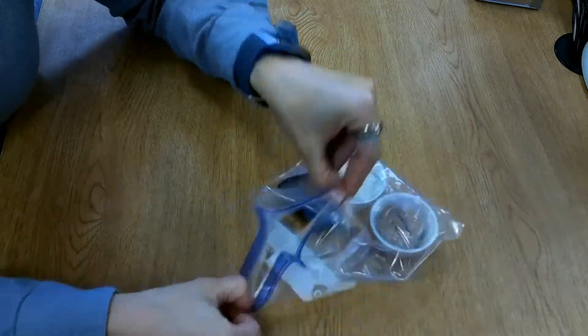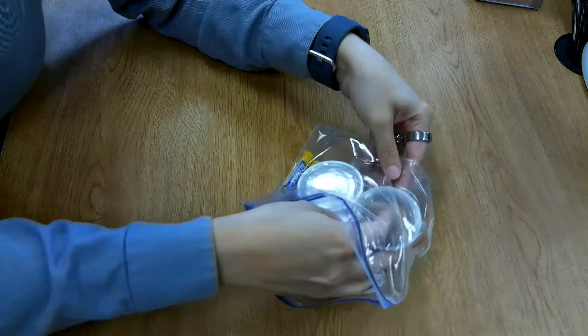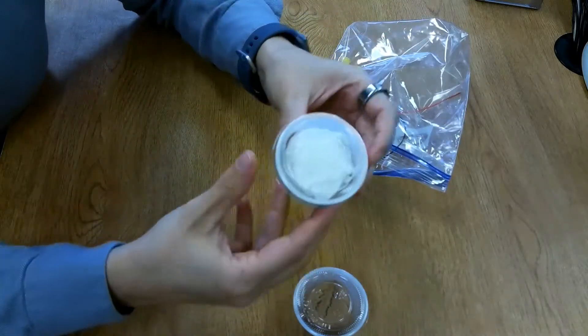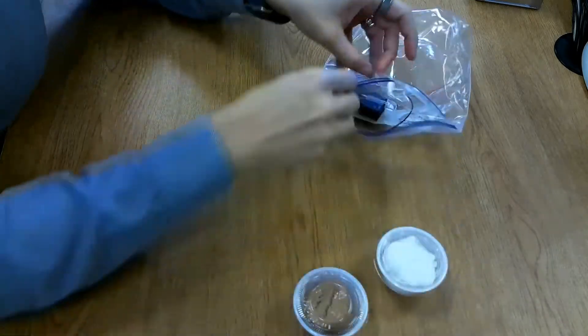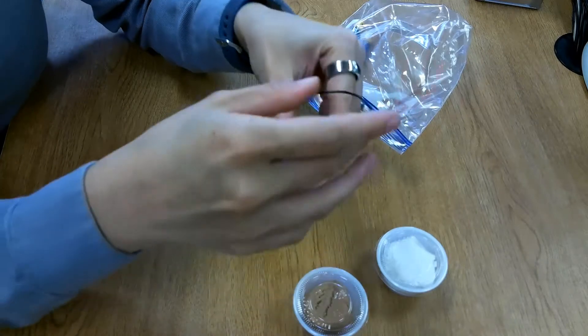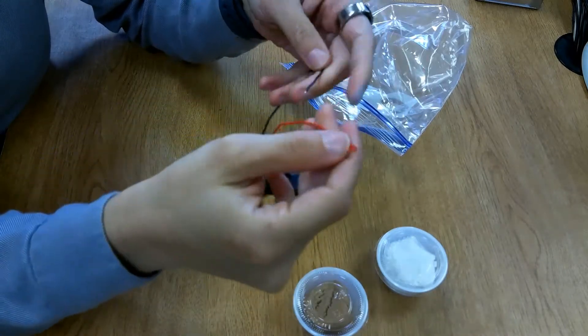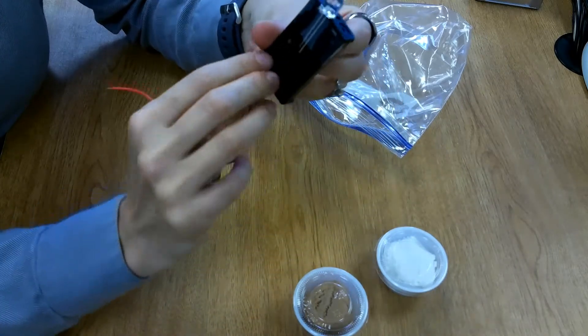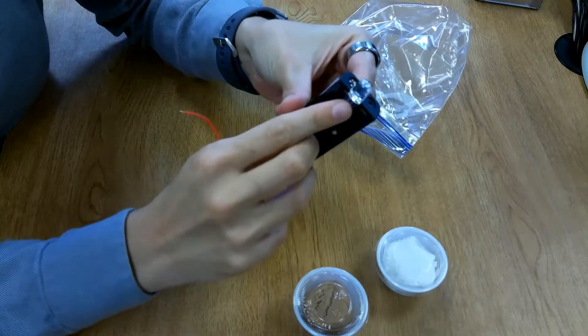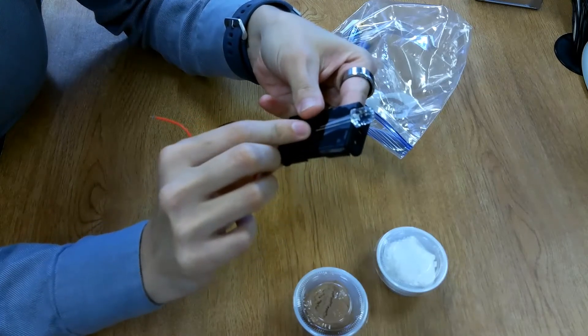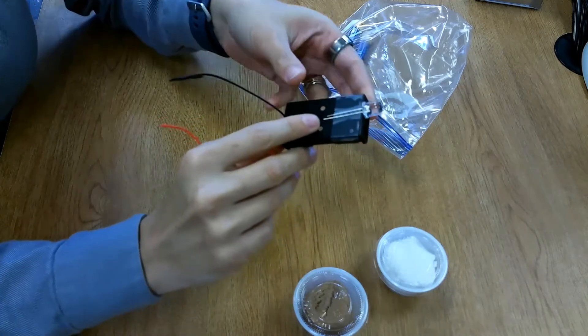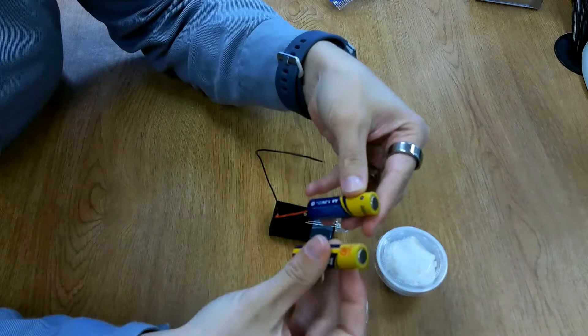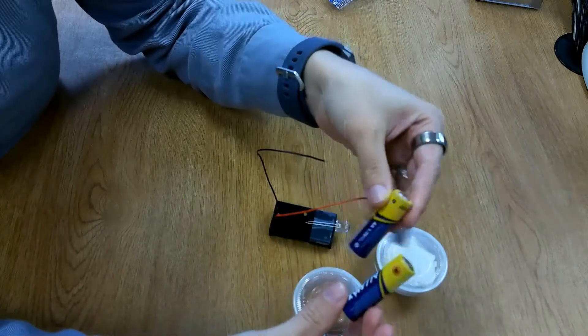So we're going to start by opening up our kit. Inside each kit you should have some Play-Doh that's going to be any color, some Model Magic dough which is white, a battery pack with two wires—a red wire for the positive side and a black wire for the negative side—and taped to your battery pack you have an LED light. Then we also have two AA batteries that are 1.5 volt.